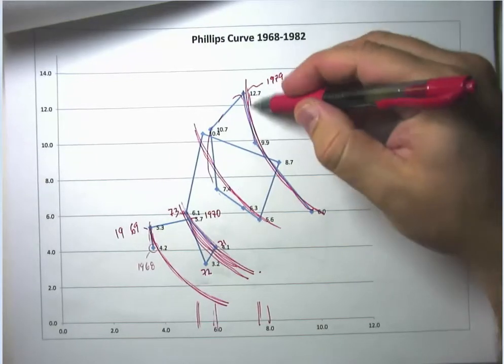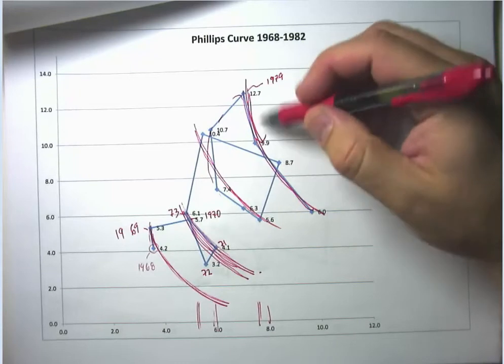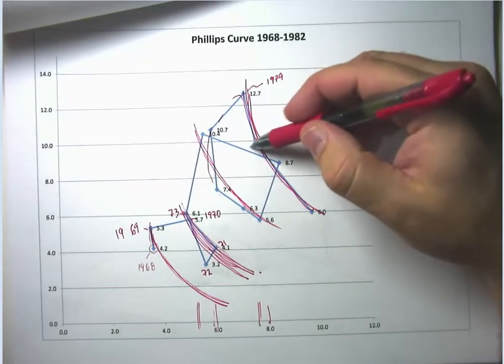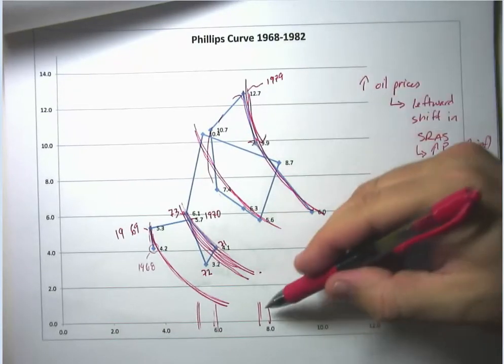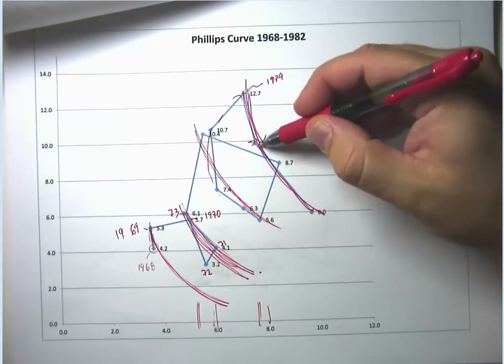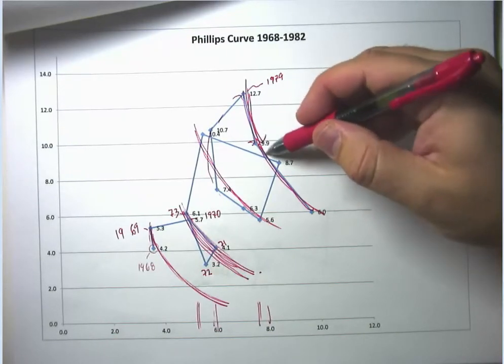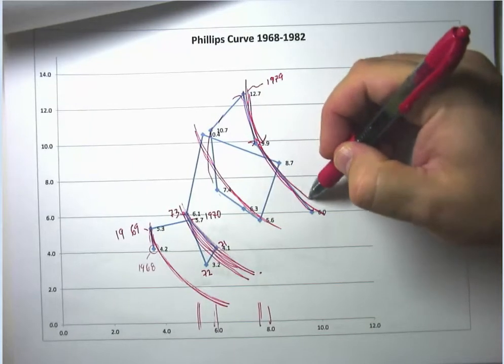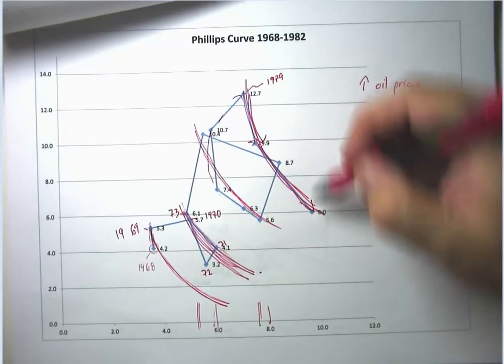And he just really tightens up the monetary policy a lot. And you can see that we start going down along the Phillips curve. So we bring down inflation at the cost of increased unemployment. And then we're driving the economy into a recession essentially to get rid of the inflation. And Paul Volcker says we're just going to keep on doing this.